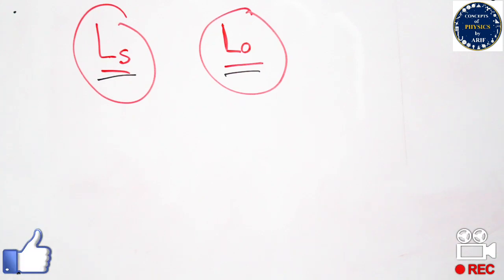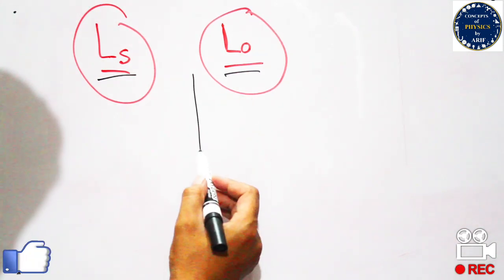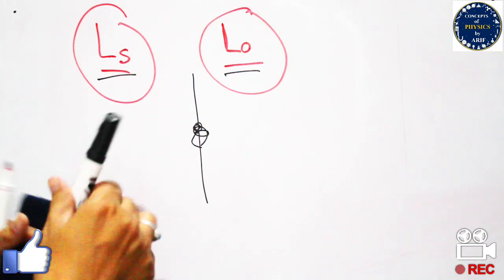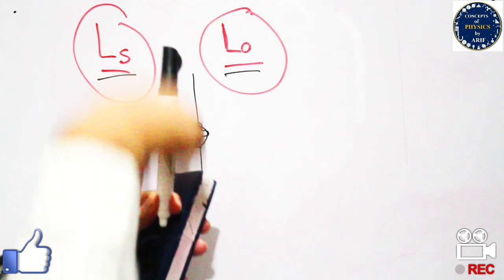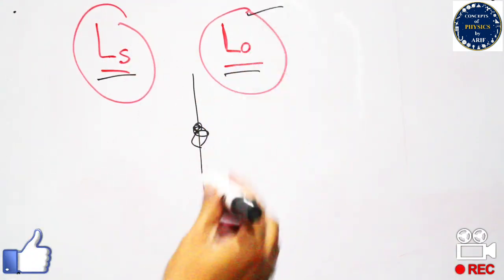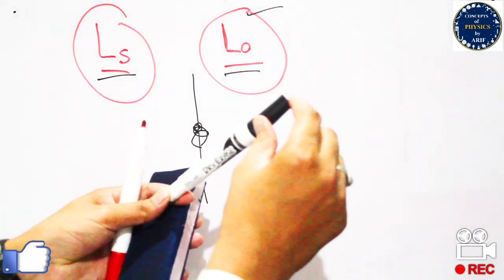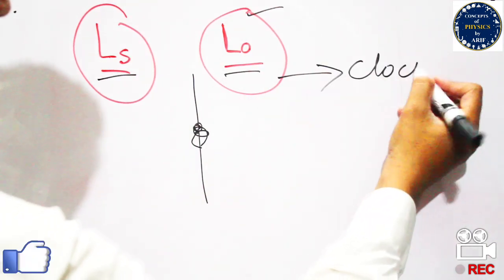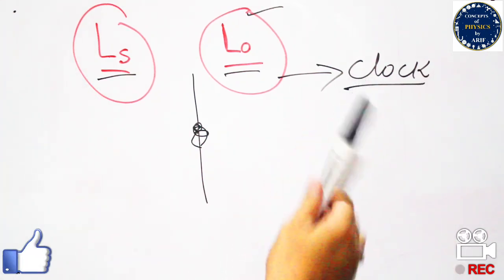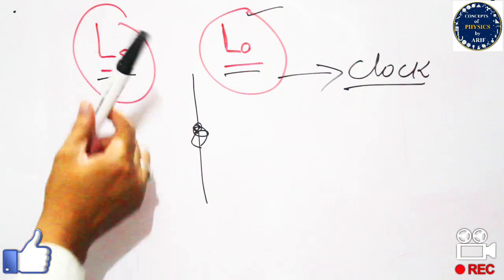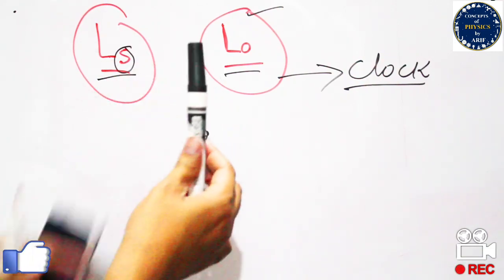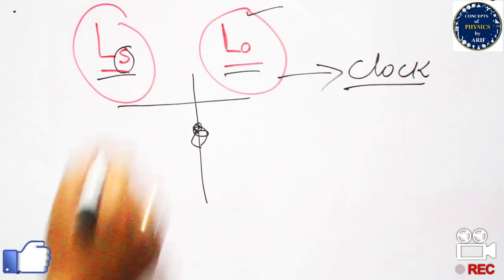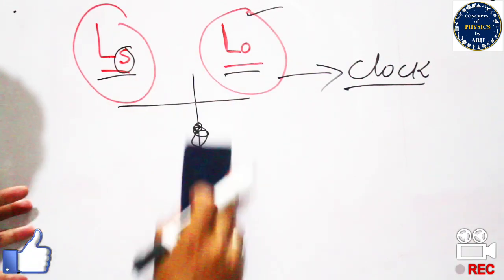Spin angular momentum is the angular momentum when a body is spinning around or across its own axis. For example, this marker spinning across its own axis represents spin motion. Orbital angular momentum occurs when the body moves in a circular path or orbit — like the needles of a clock moving in angular or orbital motion.